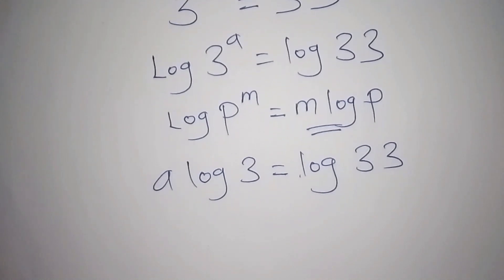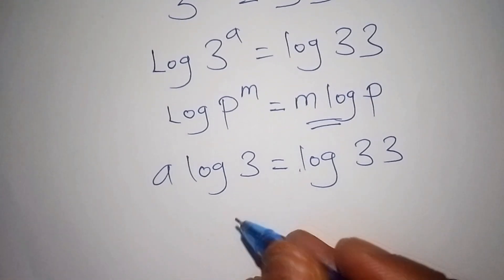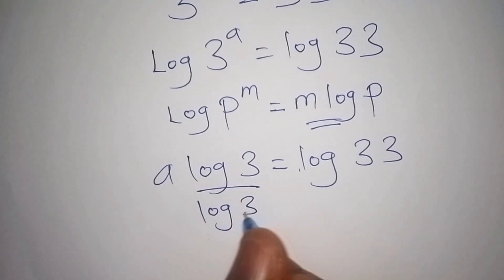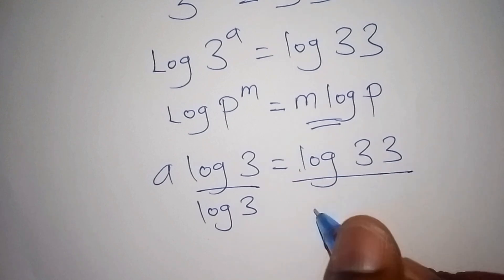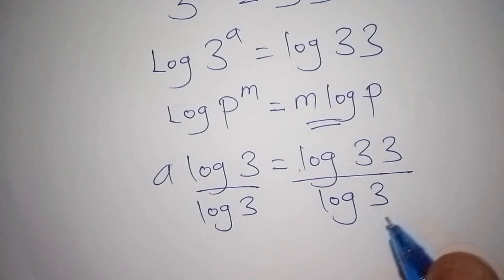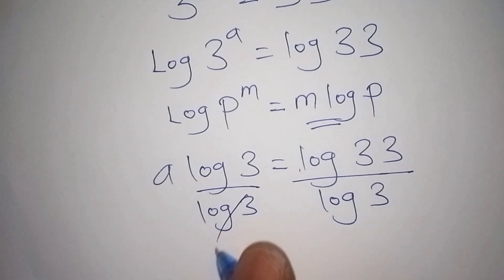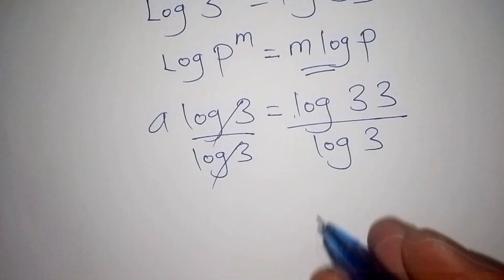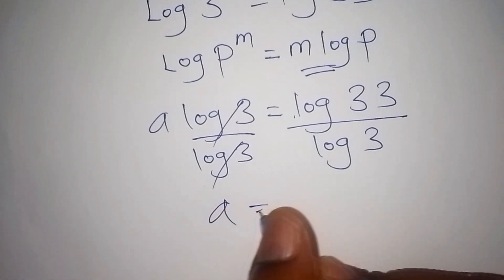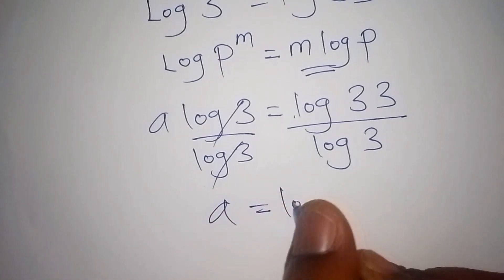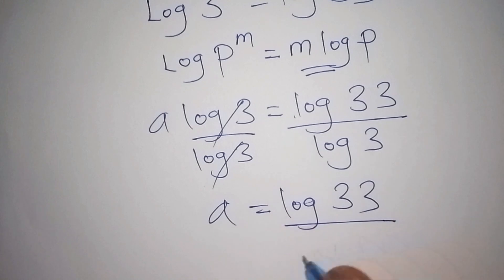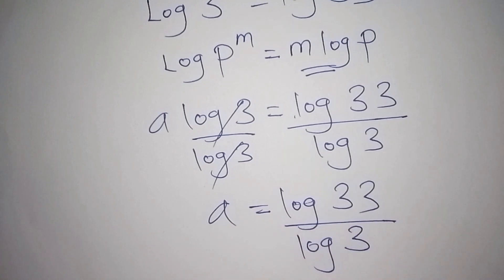To isolate a, we divide both sides by log3. The log3 on the left cancels, so we remain with: a = log33 / log3.